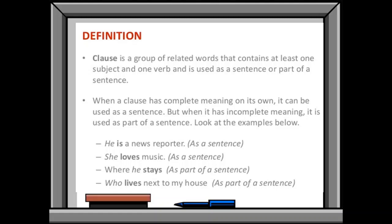Look at the examples. He is a news reporter. Here, there is a subject, there is a verb and this is conveying the full meaning. So it is working as a sentence. She loves music: she is subject, loves verb and music is object. It is conveying the full sense, so it is working as a sentence.